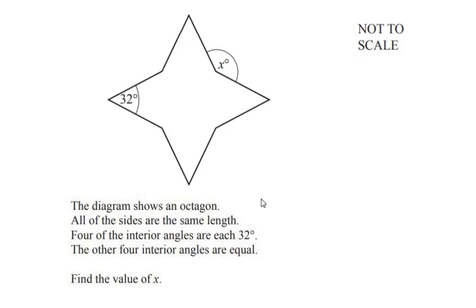Hello and welcome to my channel. In this video we are going to solve an example on polygons. The diagram shows an octagon. All of the sides are the same length. Four of the interior angles are each 32 degrees. The other four interior angles are equal. Find the value of x. So you can pause the video at this point and give it a try yourself.